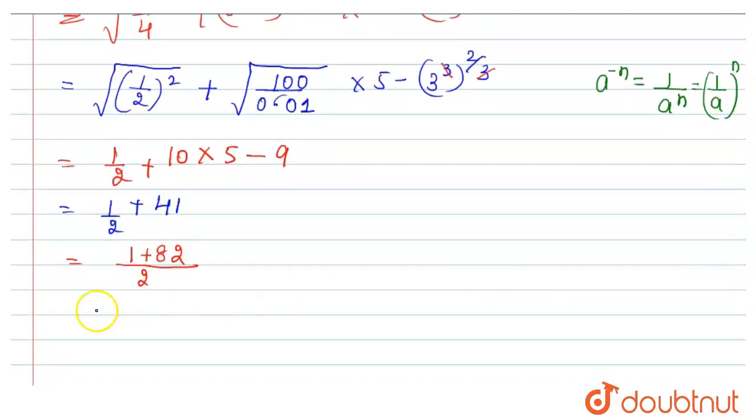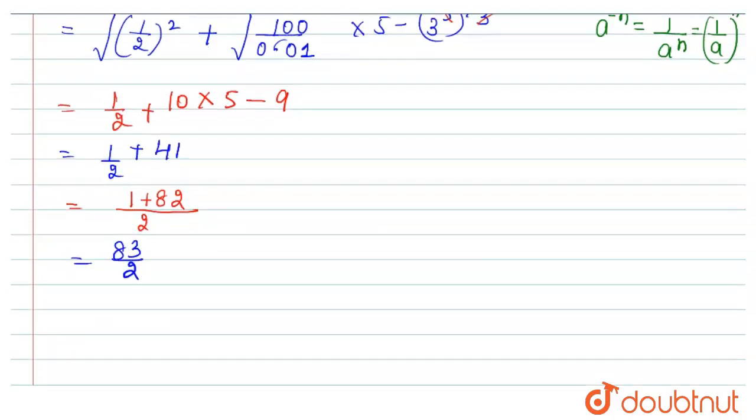So here we get 83 by 2, and we can write it as 41 and 1 by 2.